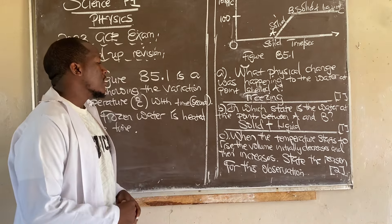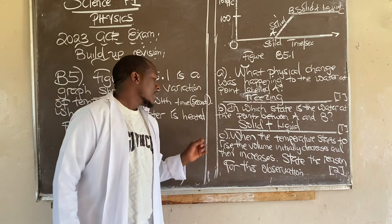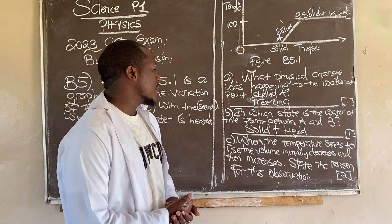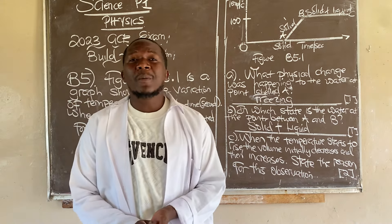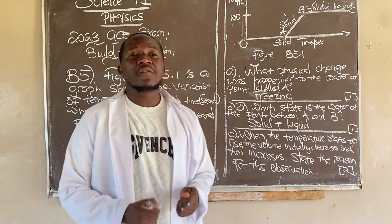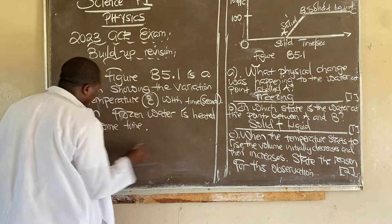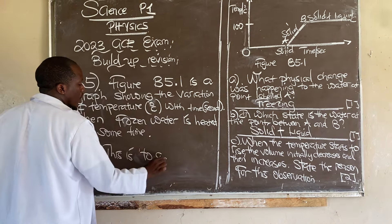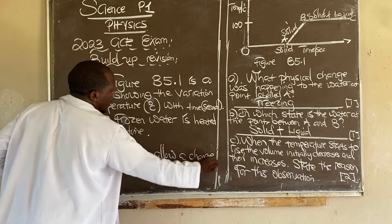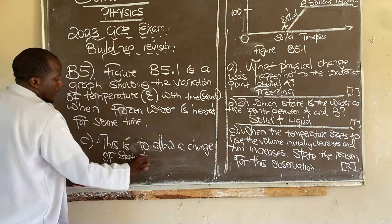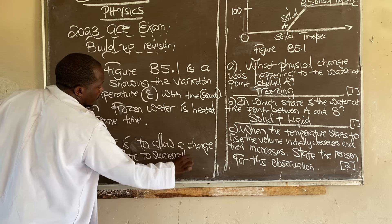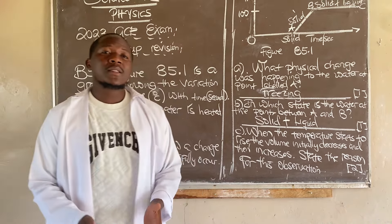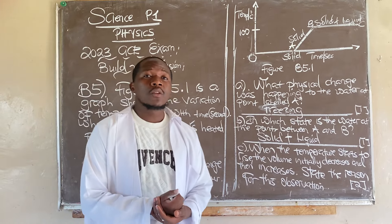Question C: when the temperature starts to rise, the volume initially decreases and then increases. The reason for this observation is that as the temperature increases or rises, the volume will decrease. This is to allow a change of state to successfully occur — it provides room for the change of state to take place.